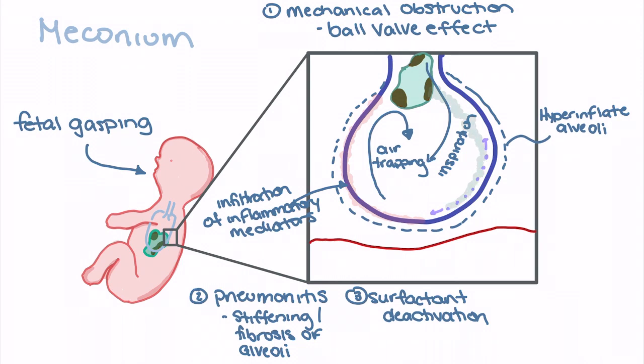As meconium enters the airway, particles within it can deactivate the surfactant or wash it out so it cannot perform its function. As a result, surface tension will rise and alveoli are more prone to collapse and atelectasis, and we see a decrease in lung compliance.